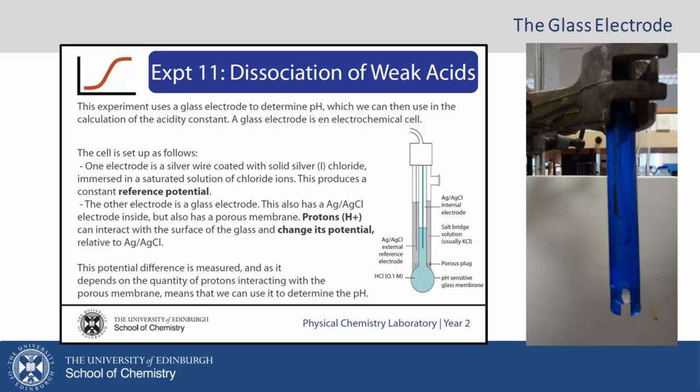We have got one electrode which is a silver wire with a solid silver chloride electrode immersed in a saturated solution of chloride ions. This produces a constant reference potential.